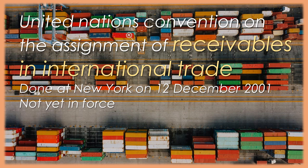Chapter 4. Rights, Obligations and Defenses. Section I. Assigner and Assignee. Article 11. Rights and Obligations of the Assigner and the Assignee. 1. The mutual rights and obligations of the Assigner and the Assignee arising from their agreement are determined by the terms and conditions set forth in that agreement, including any rules or general conditions referred to therein. 2. The Assigner and the Assignee are bound by any usage to which they have agreed and, unless otherwise agreed, by any practices they have established between themselves. 3. In an international assignment, the Assigner and the Assignee are considered, unless otherwise agreed, implicitly to have made applicable to the assignment a usage that in international trade is widely known to, and regularly observed by, parties to the particular type of assignment or to the assignment of the particular category of receivables.